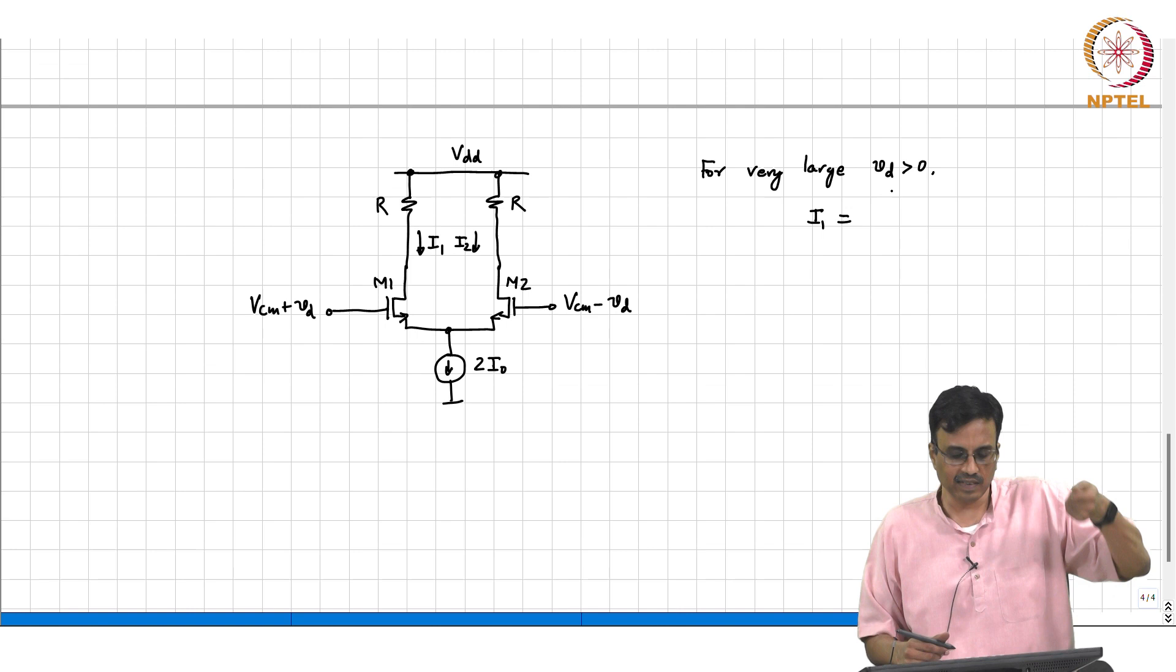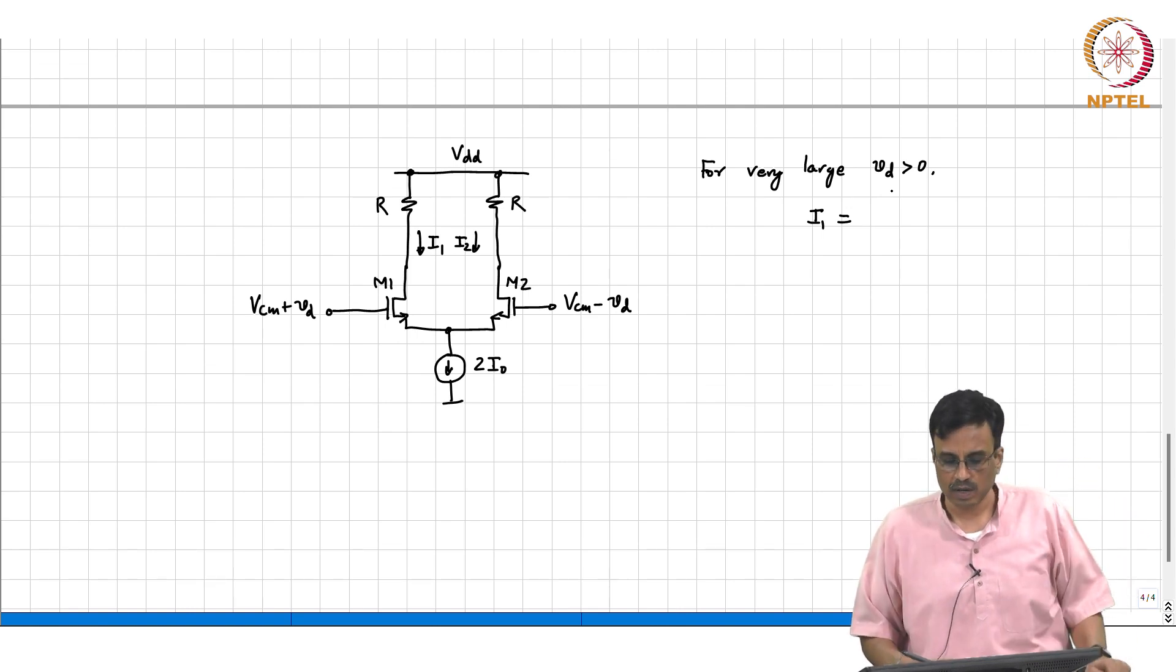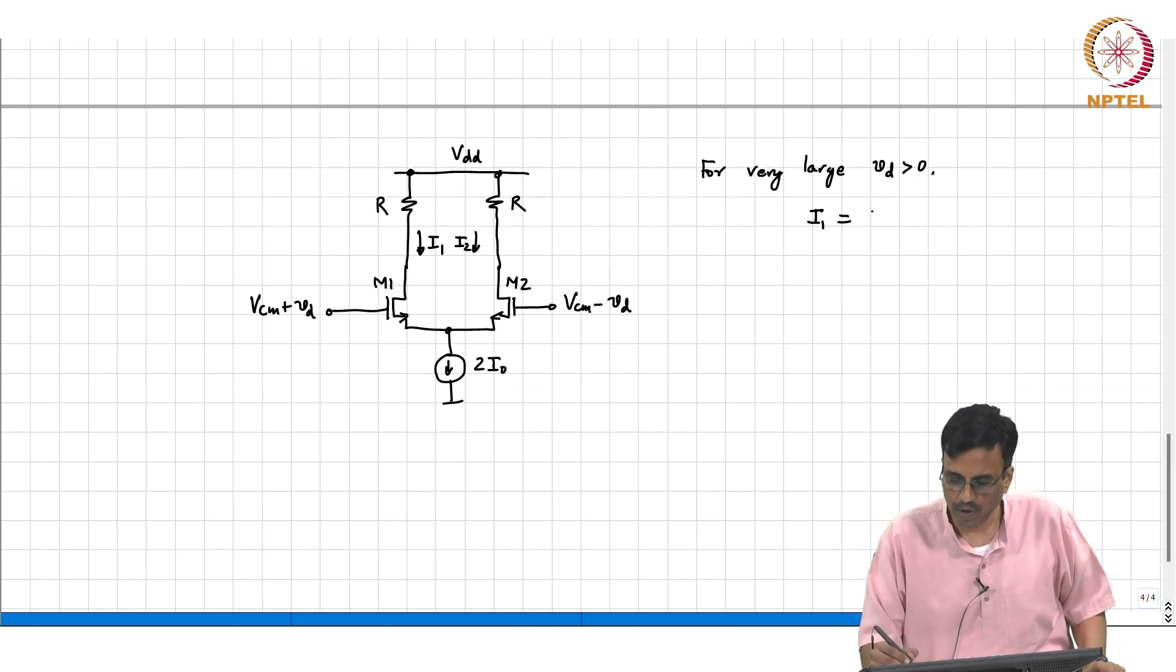If you keep increasing M1, it will steal more and more current. M2 will get cut off. So I1 will equal 2 I naught, I2 equals 0.